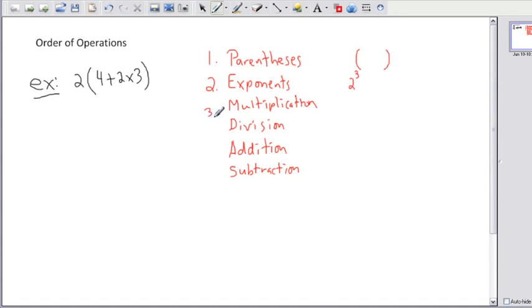Now number 3 here, that's these two together. Multiplication or division, those come together. So you do those next. And after that comes number 4, addition and or subtraction. Those come last.